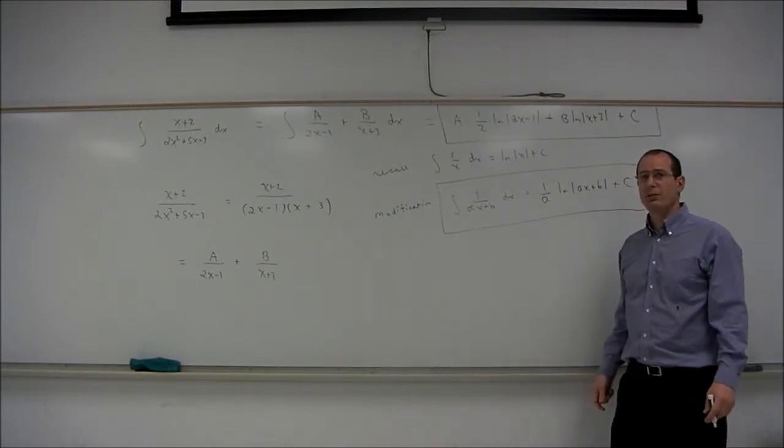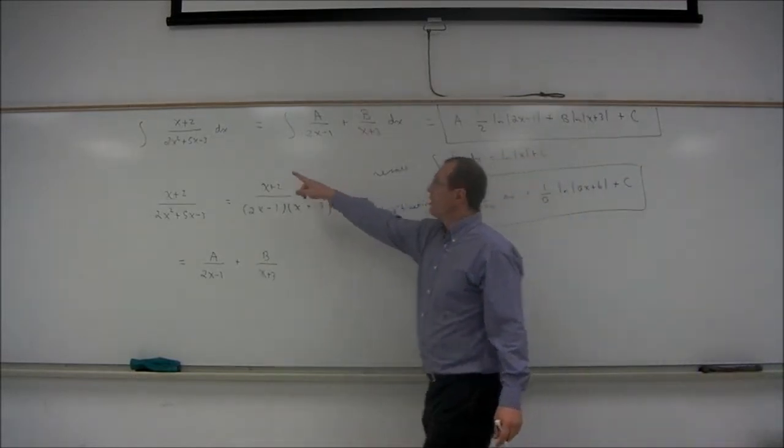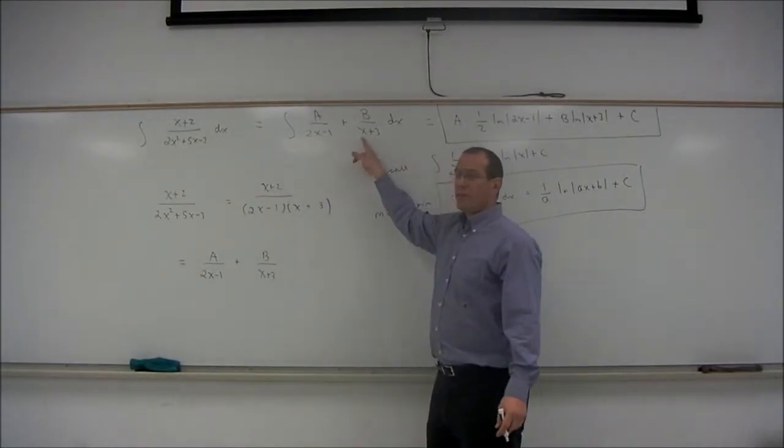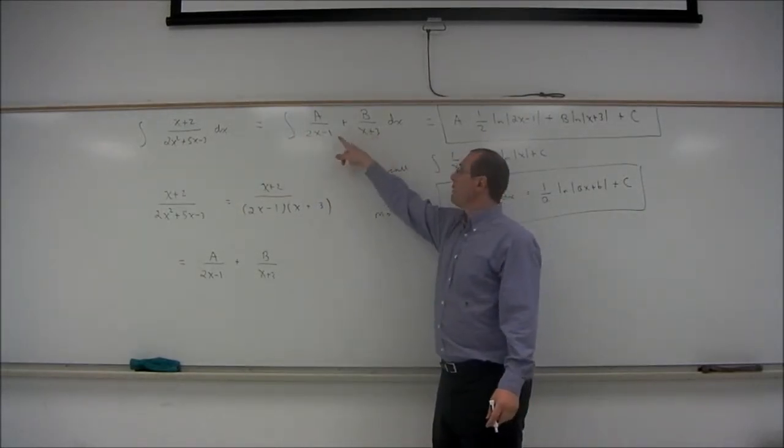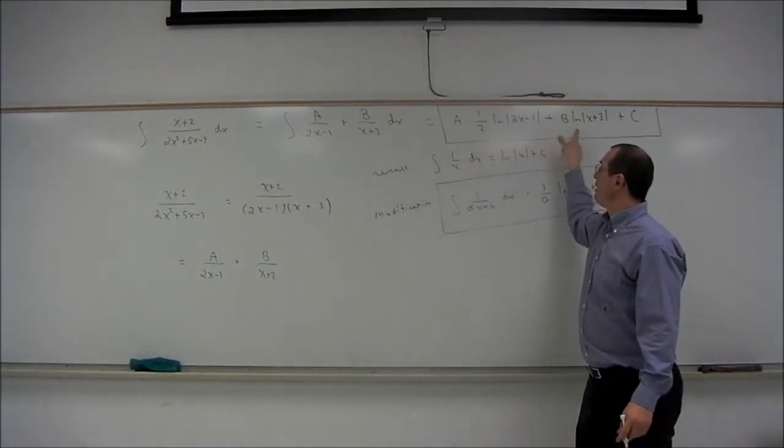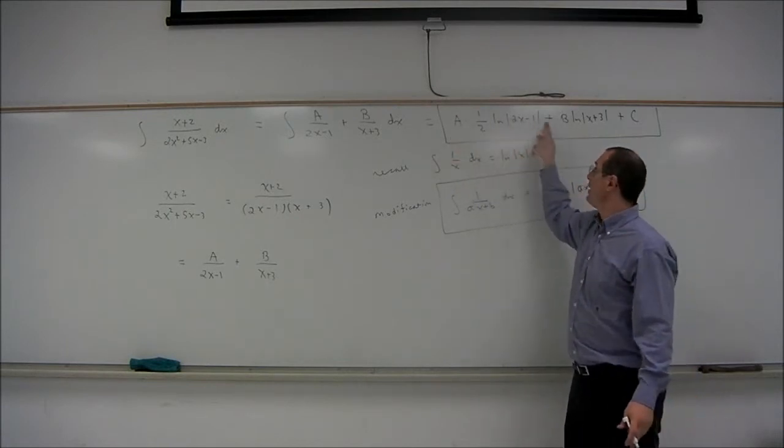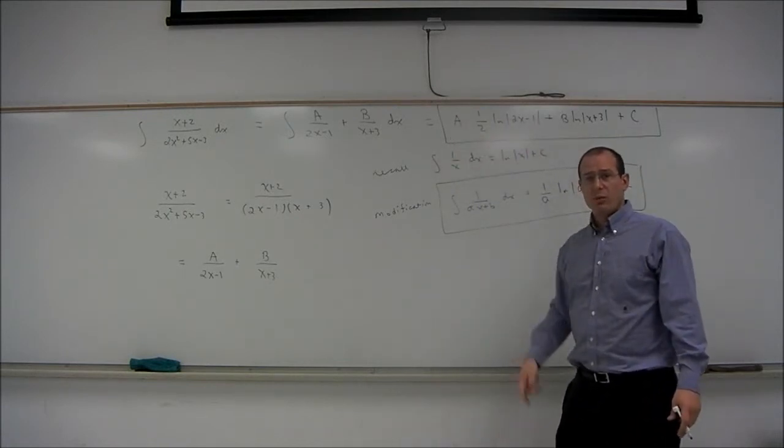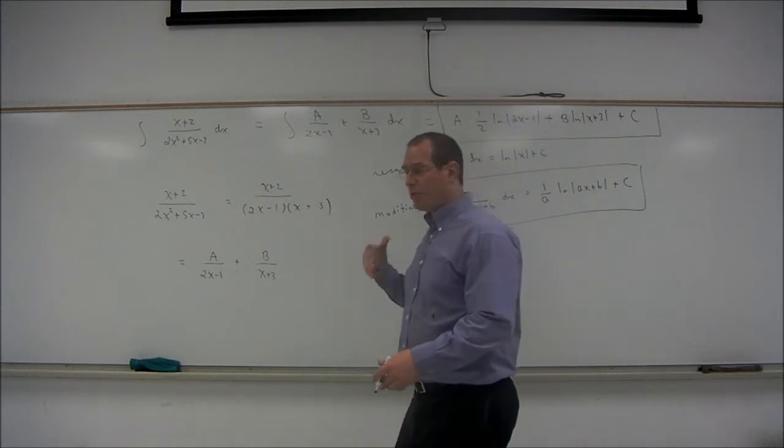So notice the order in which I'm doing things. First, write the nature of the decomposition, the form of the decomposition. Then you can integrate that without knowing the values of a and b. So next, we'll figure out a and b, and plug those numbers in.